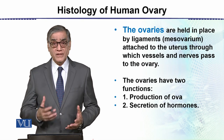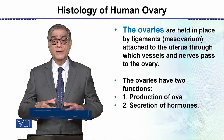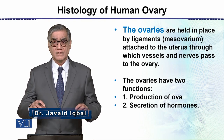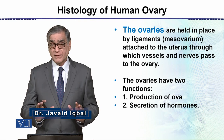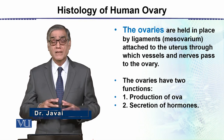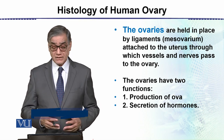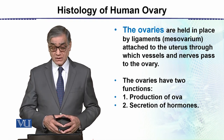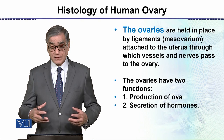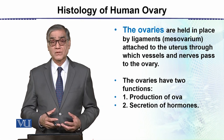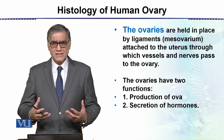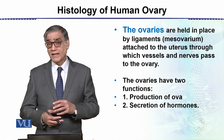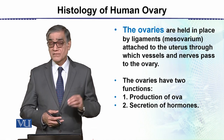The ovaries are held in place by a ligament which we call the mesovarium. This is attached to the uterus, through which vessels and nerves pass to the ovary.